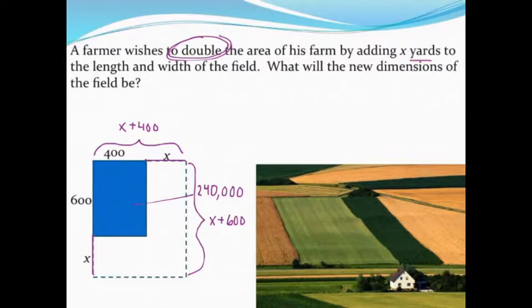I've got a length of x plus 400, and we know the area's length times width for a rectangle, and then the width is going to be x plus 600. I want that to be equal to not 240,000, but remember we said we wanted to double our area. So if our area currently is 240,000, I want to double that to 480,000.